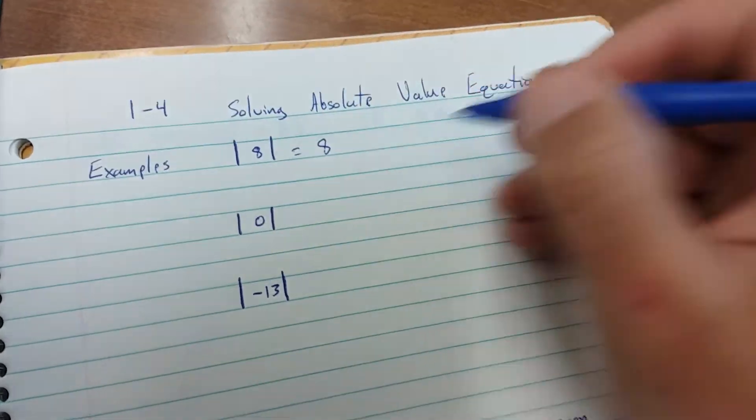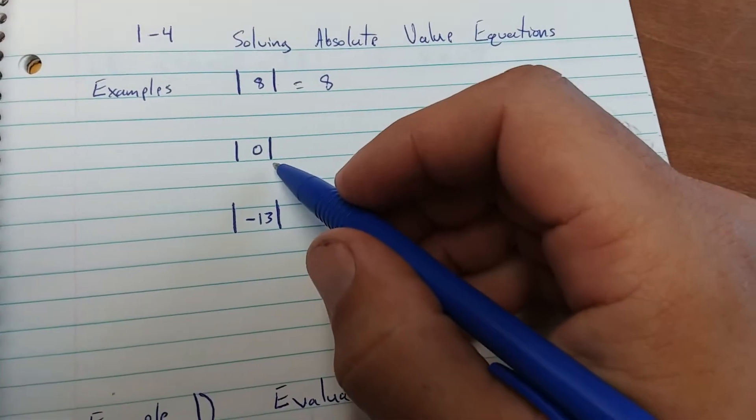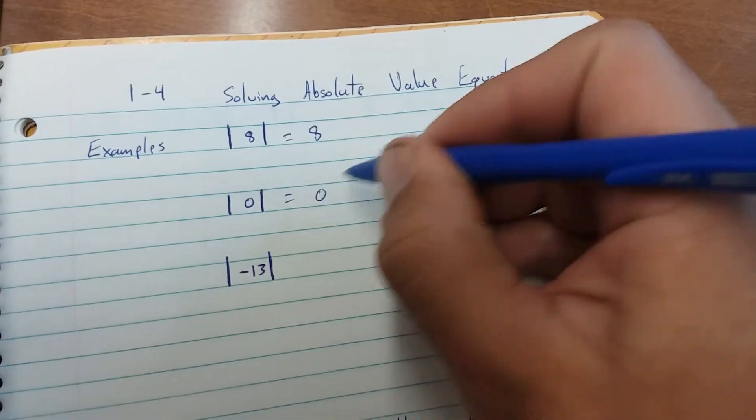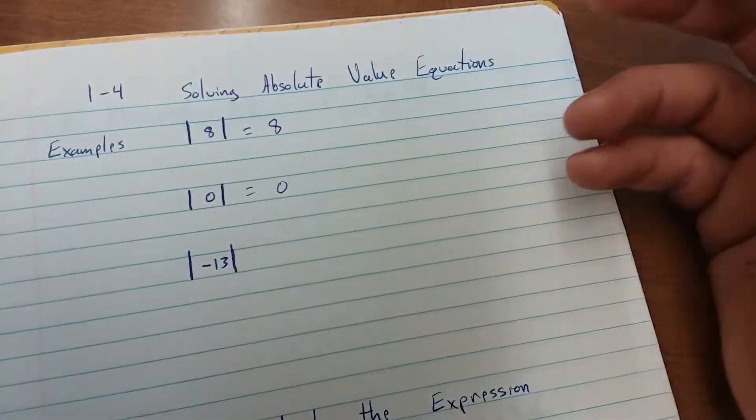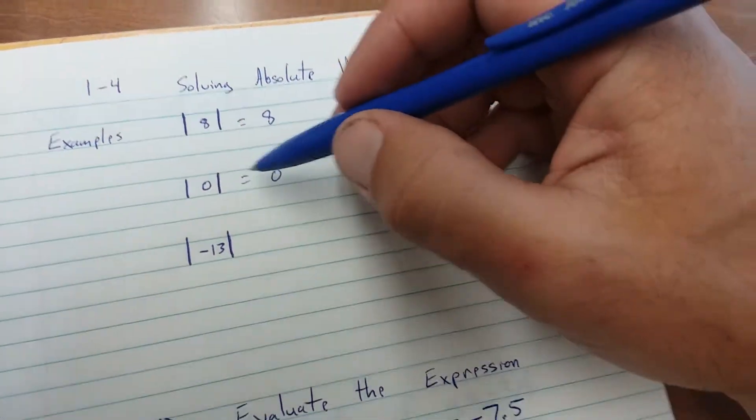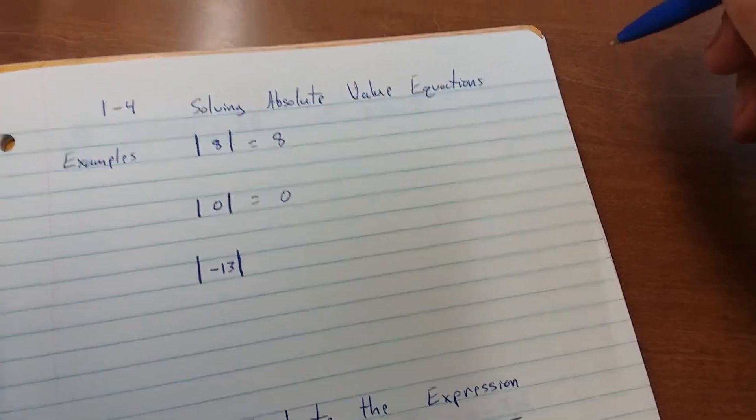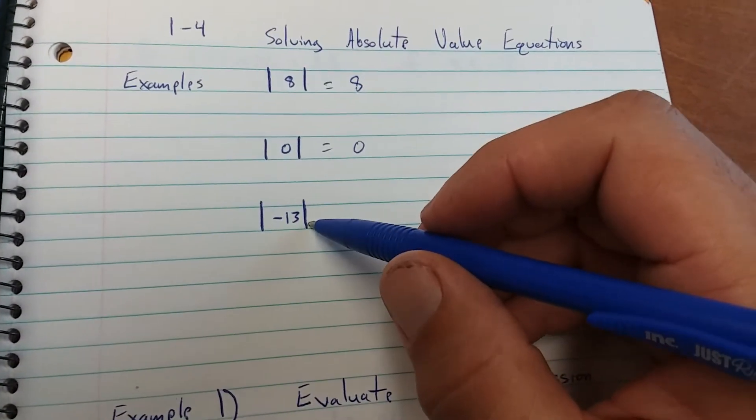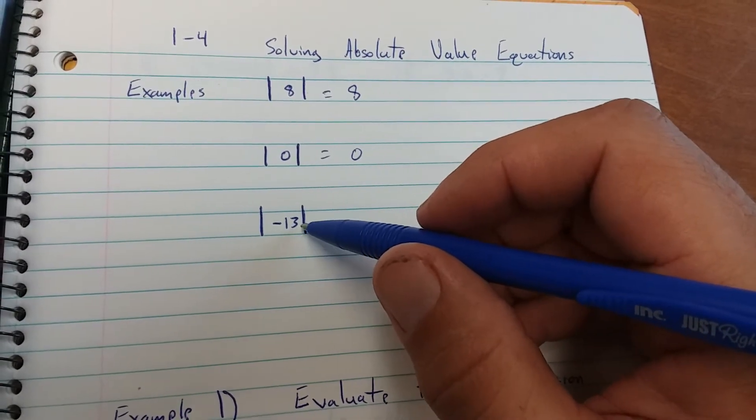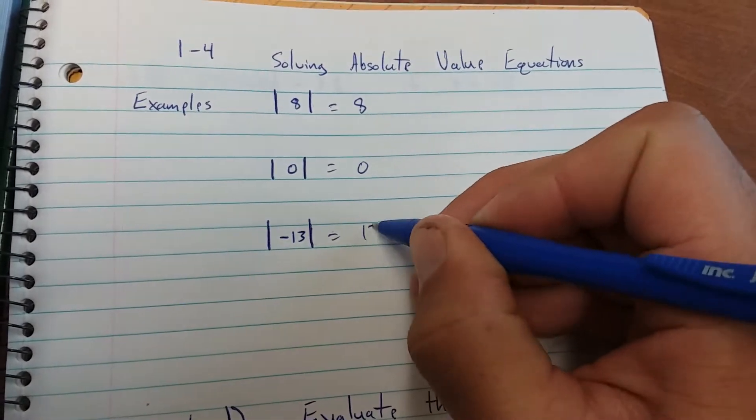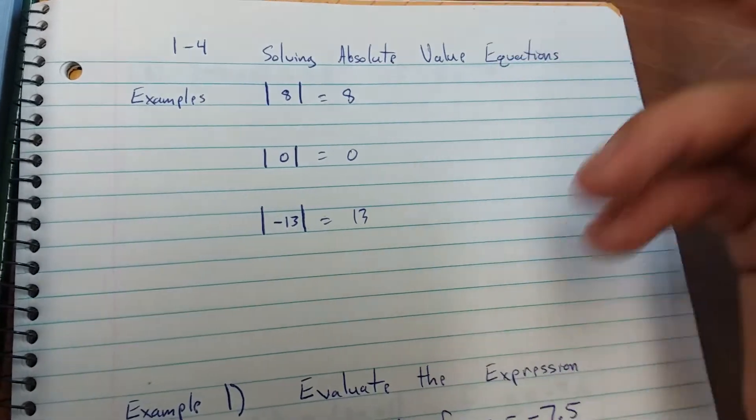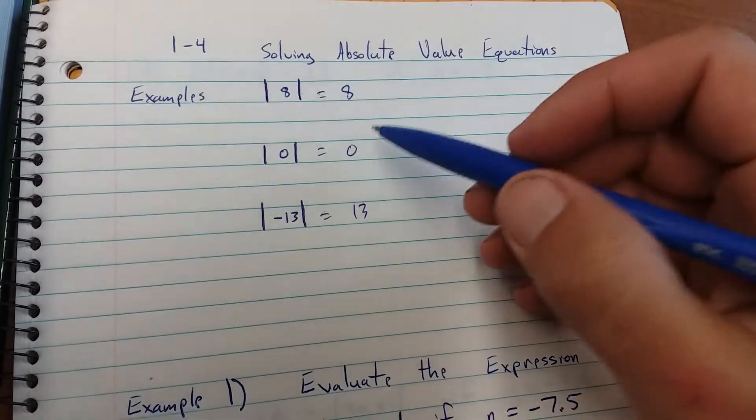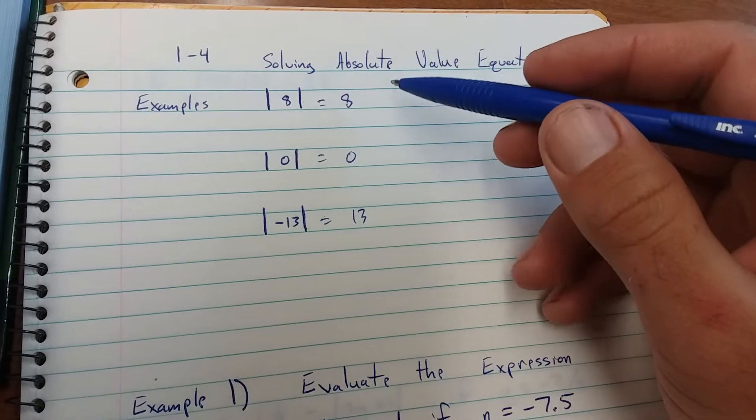The absolute value of 8 is 8. It's 8 spaces from zero on the number line. The absolute value of 0 is 0. It's the only non-positive absolute value. Zero is considered non-positive and also non-negative. It's neutral. The absolute value of negative 13 is 13. So you're just writing the positive or non-negative value down each time.